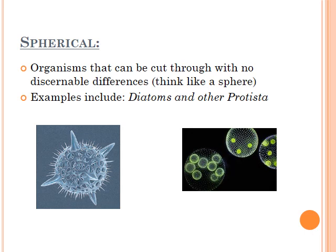Spherical. Spherical organisms can be cut through with no discernible differences — think like a sphere. There are very few organisms in nature that occur like this, so think about diatoms, which are a very small protista, also known as phytoplankton, and other protista such as some types of algae and other very small microscopic organisms. Remember: spherical — it's a sphere, think like a ball.